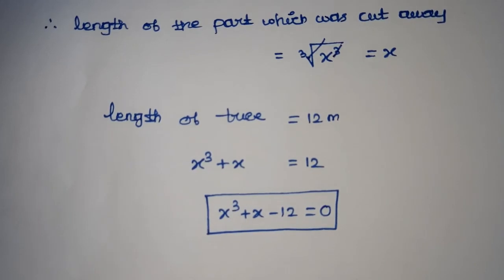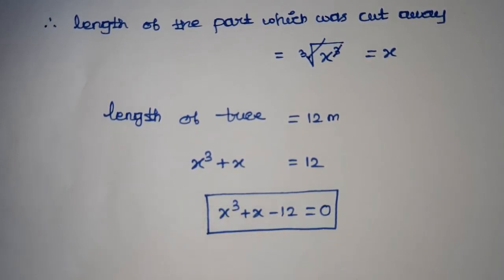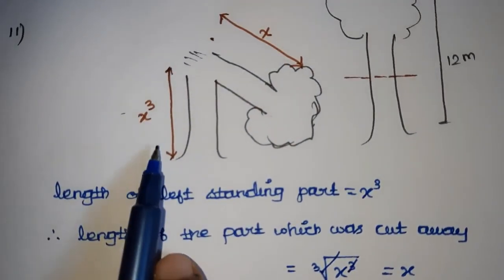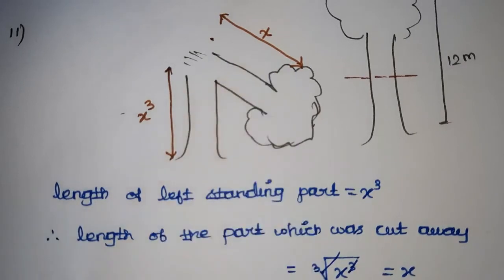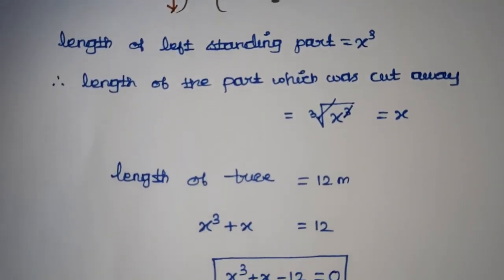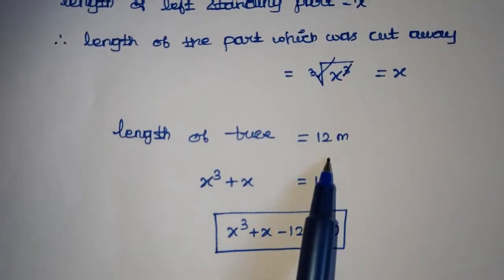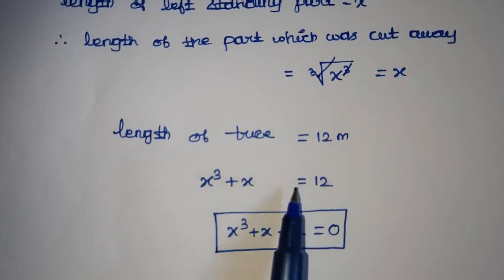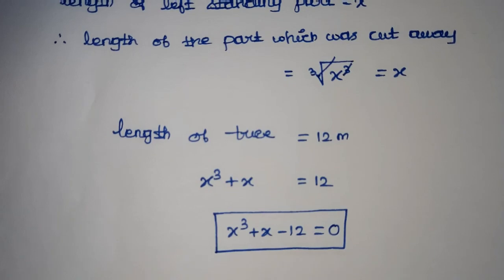This is the mathematical problem formulation. We have x cubed as the cut away part and x as the left standing part. The total length gives us x cubed plus x equals 12, or x cubed plus x minus 12 equals 0. This is the required mathematical problem.